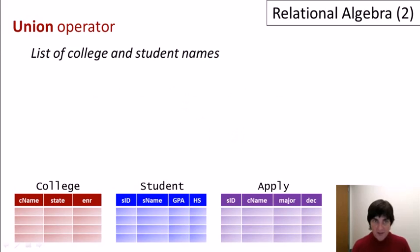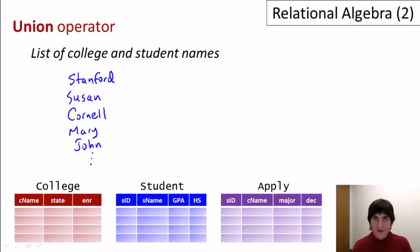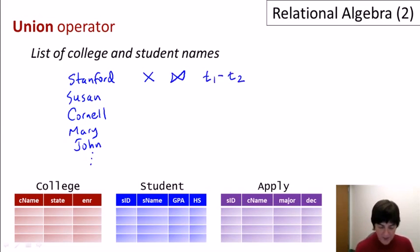The first of three set operators is the union operator, and it's a standard set union. Suppose we want a list of the college and student names in our database — Stanford, Susan, Cornell, Mary, John, and so on. The cross-product or natural join operators combine information horizontally, matching tuple T1 from one relation with tuple T2 from the other, but that's not what we want here. We want to combine the information vertically to create our list, and to do that we're going to use the union operator.